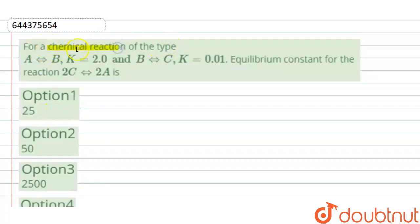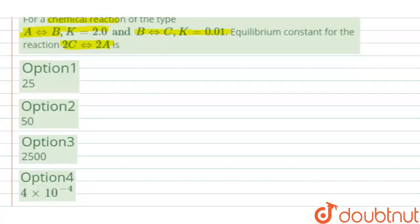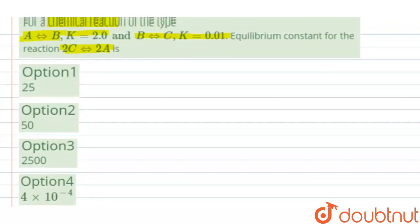The question is: for a chemical reaction of the type A in equilibrium with B, it has equilibrium constant 2, and B in equilibrium with C, it has equilibrium constant 0.01. So the equilibrium constant for the reaction 2C in equilibrium with 2A is — and these are the options.